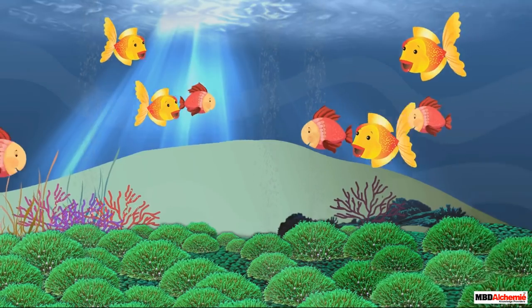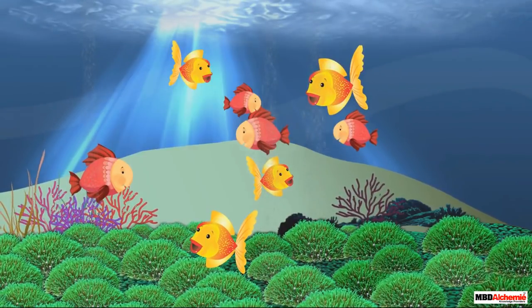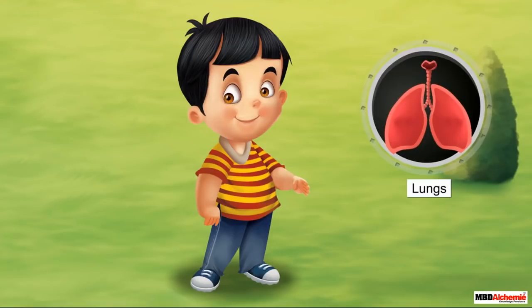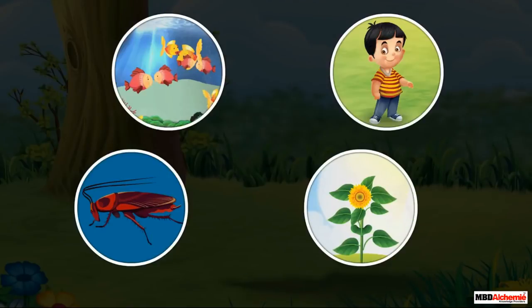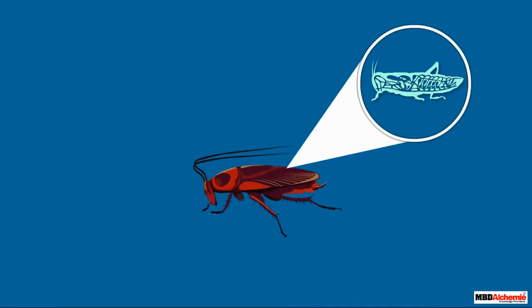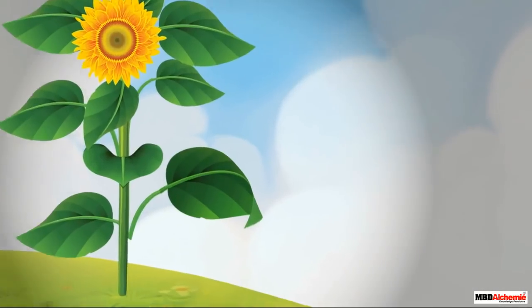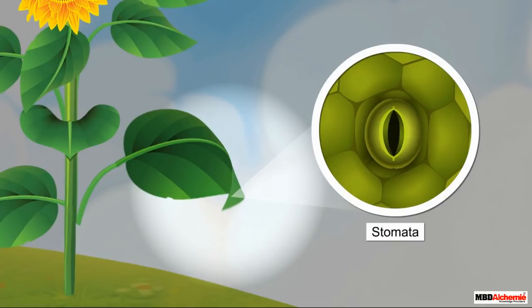All living things breathe. Animals breathe using their special body parts. For example, a fish uses its gills to breathe. Human beings use their lungs to breathe. Insects use tiny holes to breathe. Plants breathe using tiny openings present on the surface of their leaves. These tiny openings are known as stomata.